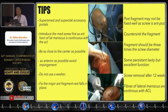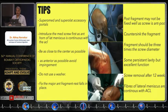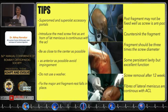Take a superomedial and superolateral accessory portal. Introduce the medial screw first, since the anterior horn of the lateral meniscus is continuous with the ACL. Stay as close to center as possible — too medial and you will scuff the articular cartilage; too posterior and you will cause impingement on the intercondylar notch, giving rise to a fixed flexion deformity.